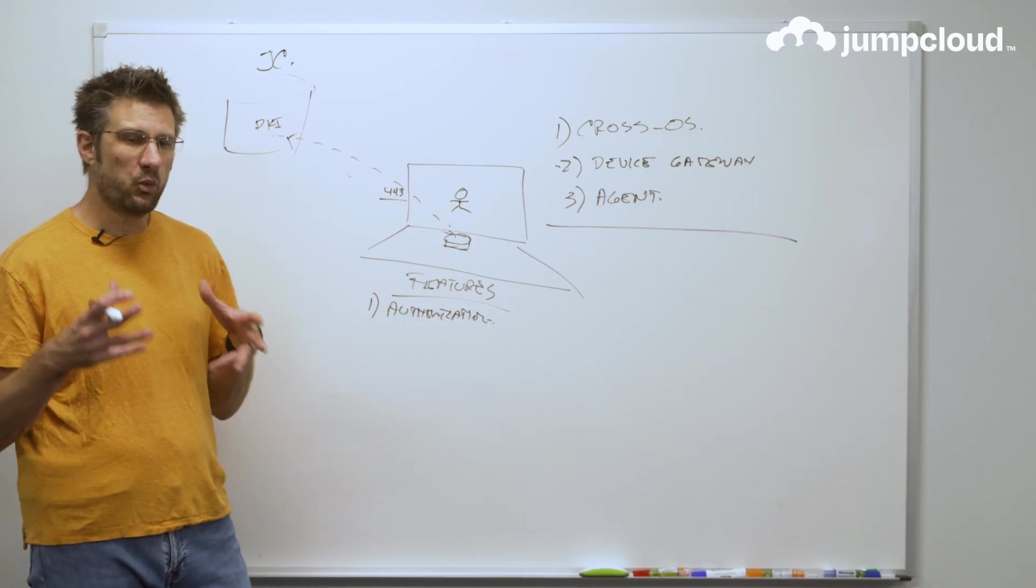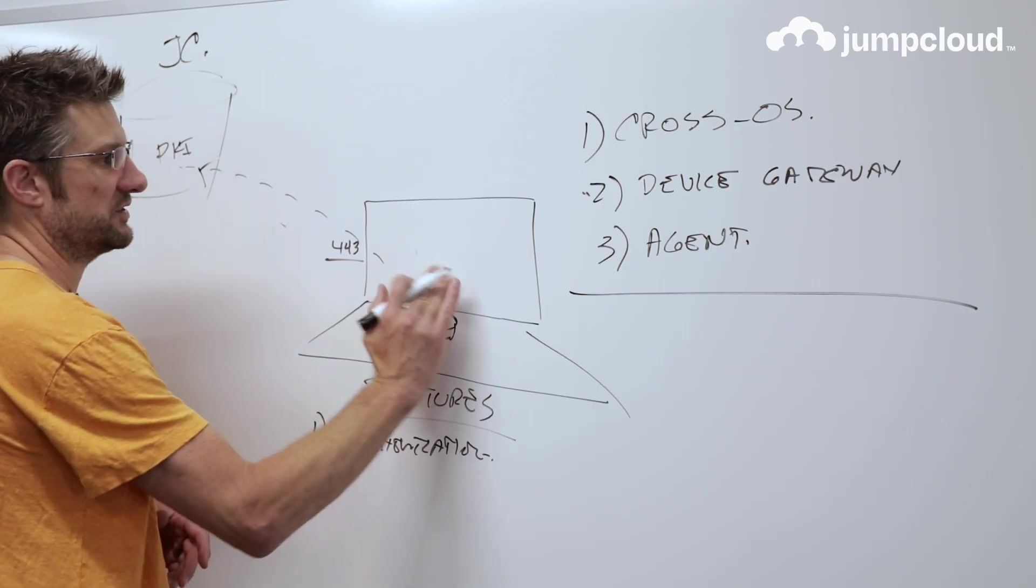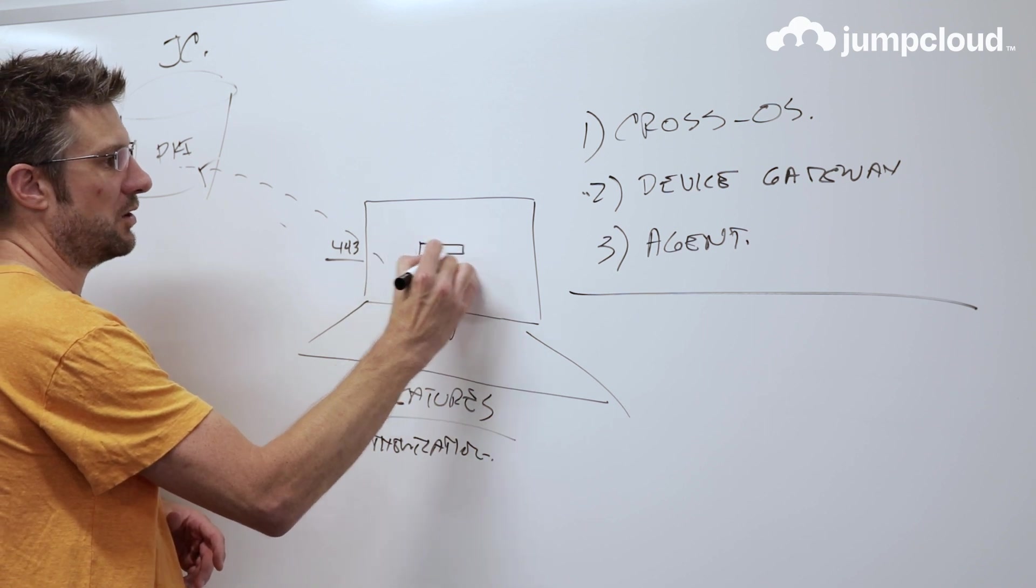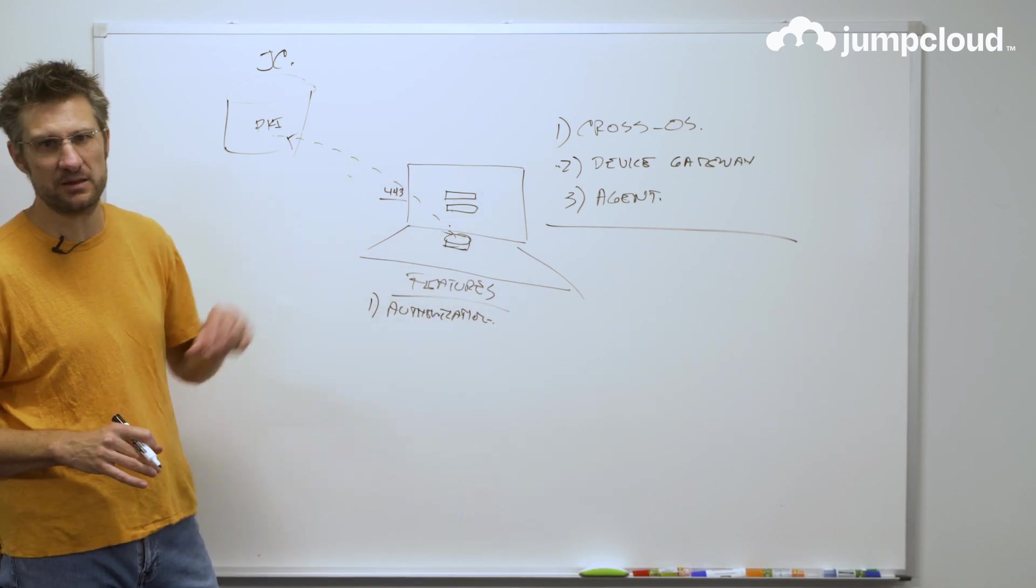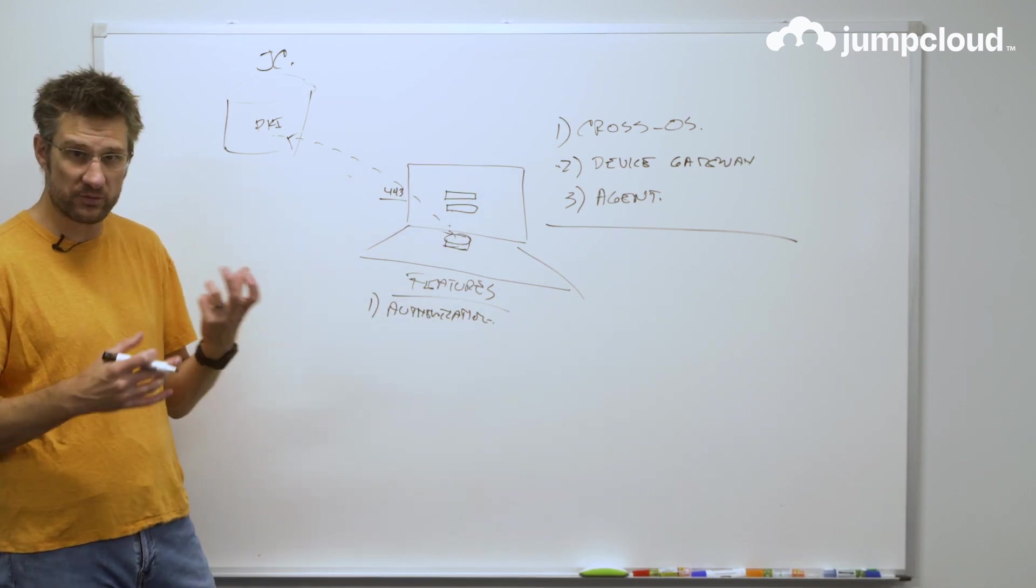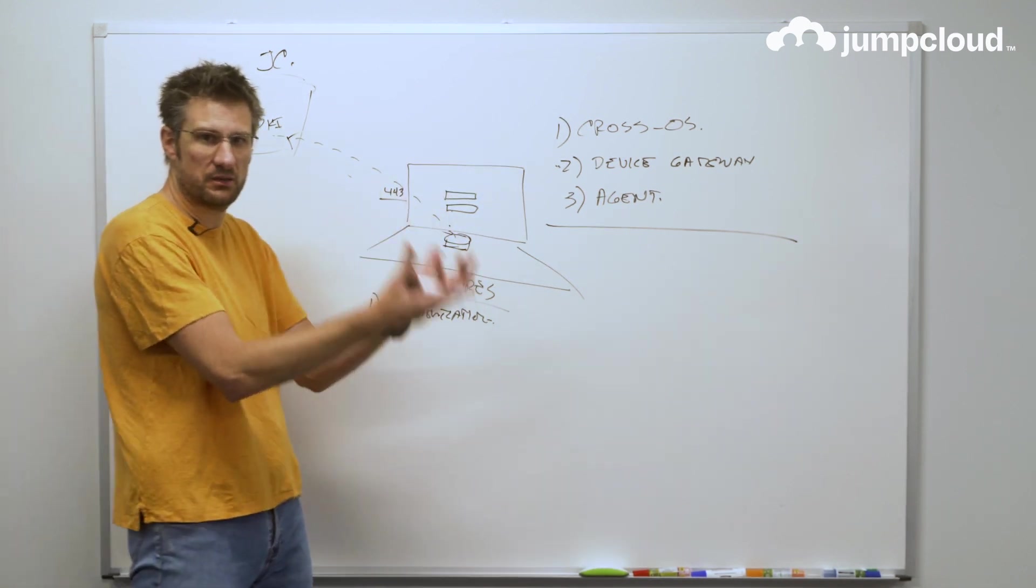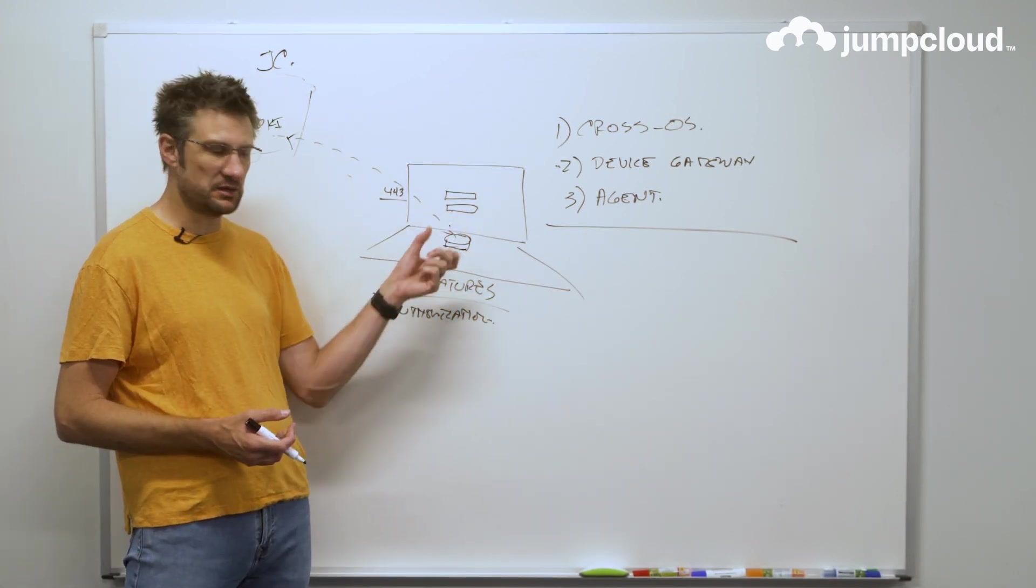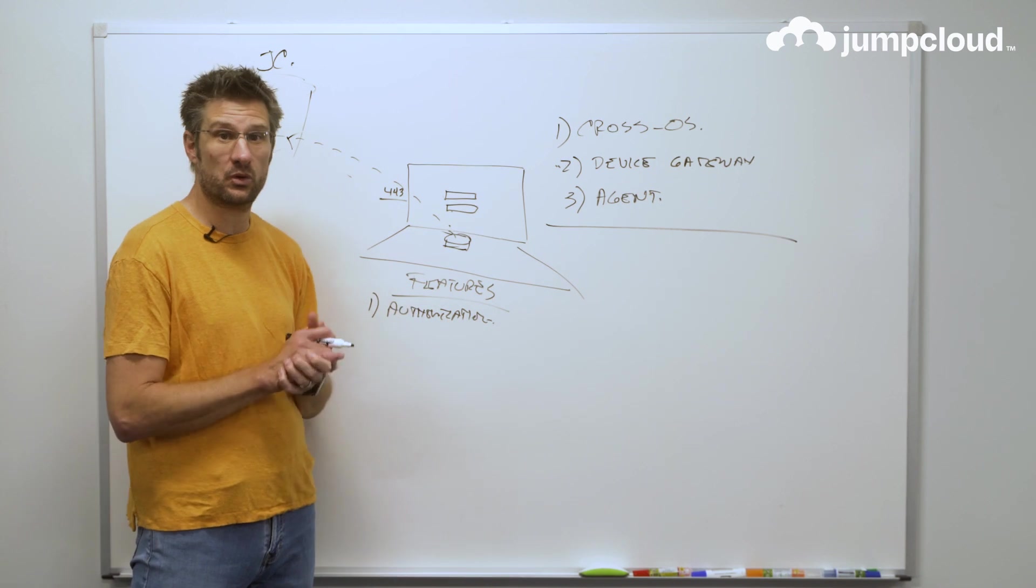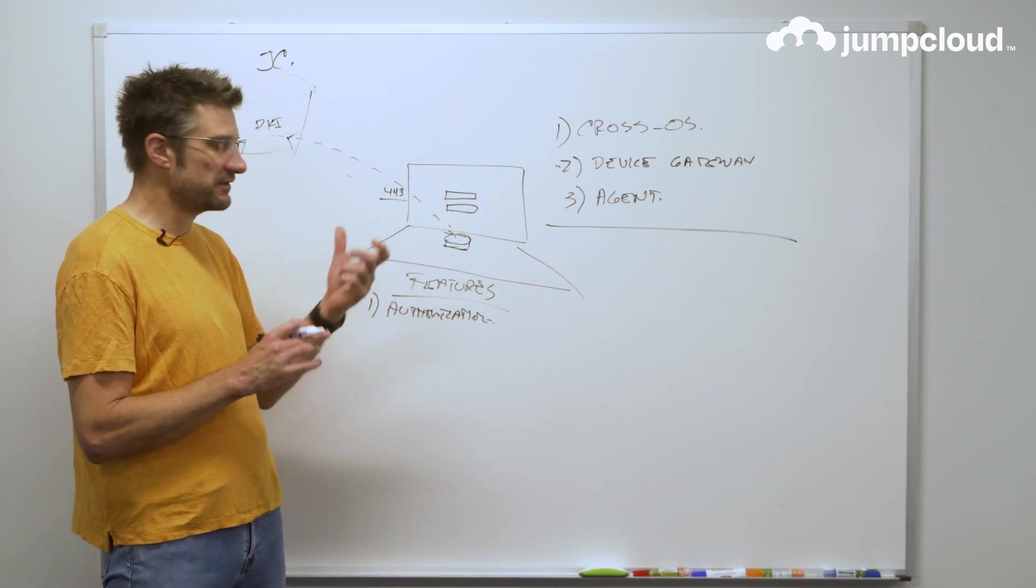Which means we own—we are the ones who own the username, the password, all of the access into the box, right? So remember, JumpCloud directory, we are the authentication provider. So the agent is controlling the login screen, knows the user account, and of course knows and will verify the credentials.